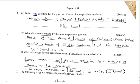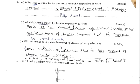Part B: What is the respiratory quotient? The respiratory quotient is the ratio of the volume of carbon dioxide produced to the volume of oxygen consumed in respiration. The formula is: RQ = volume of CO₂ produced ÷ volume of O₂ consumed.